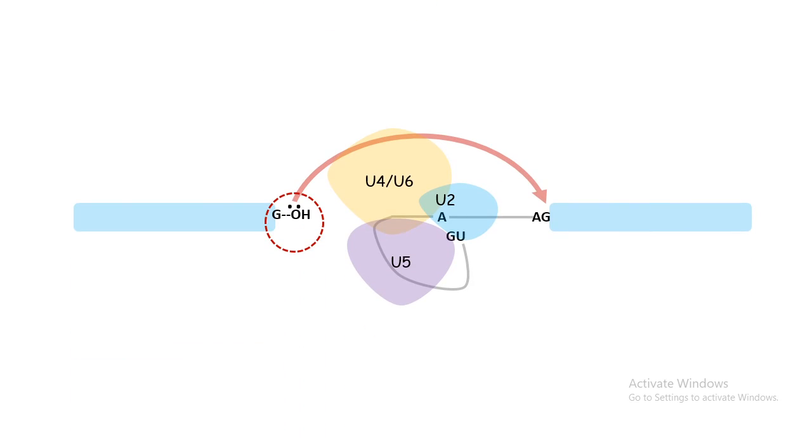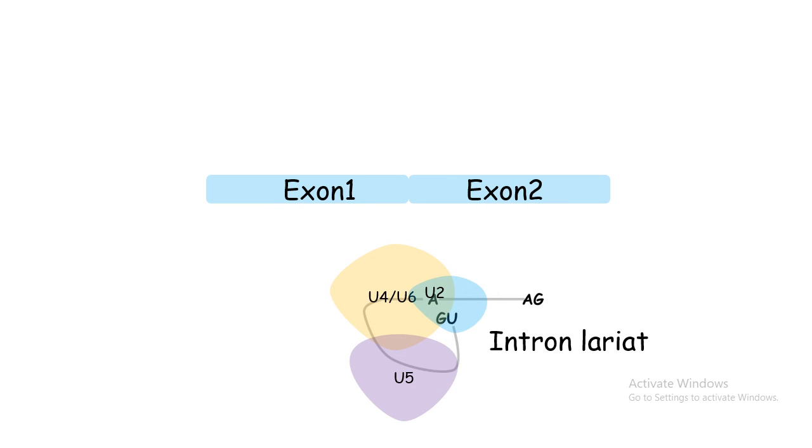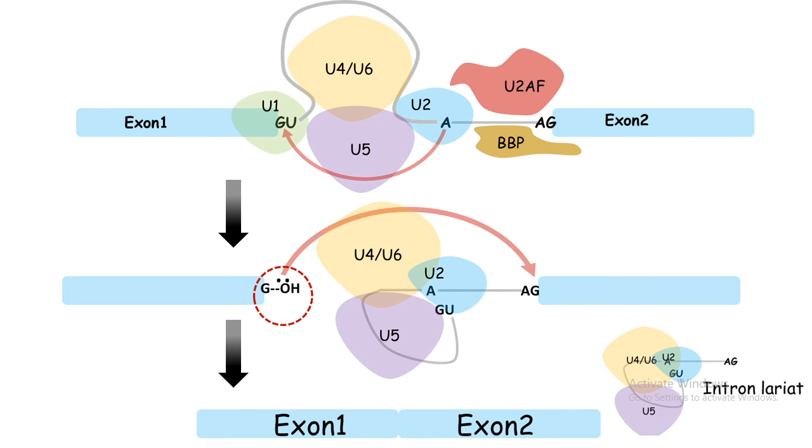Then the 5 prime splice site has an open hydroxy group which can further hit the 3 prime splice site. Ultimately, the exons are rejoined and the lariats along with these snRNPs are removed. These snRNPs help to hold these complex exons and introns in a particular position such that they don't float away inside the cell.